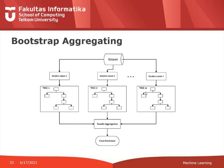So this is how bagging or bootstrap aggregating works. From the original dataset we create several random subsets, from each subset we train a model, and then we make predictions using each of the models. In this case we are using a decision tree, so we can have multiple decision trees and the results are aggregated using either majority vote or averaging to give the final prediction.